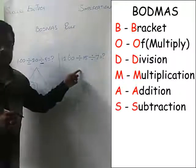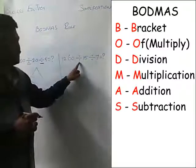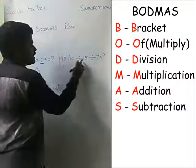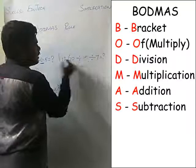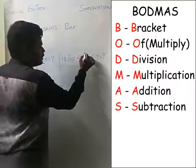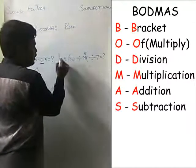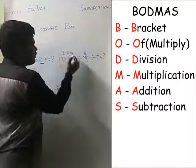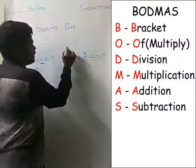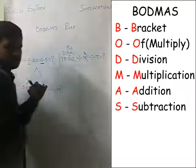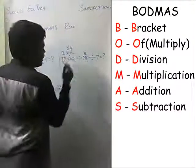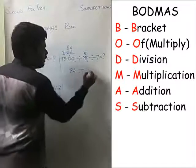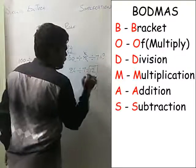Here is another similar problem. Do the first (leftmost) division first: 1260 divided by 15. Divide by 5 to get 420, then divide 420 by 5 to get 84. Then do the second division: 84 divided by 7 equals 12. So 12 is the right answer.